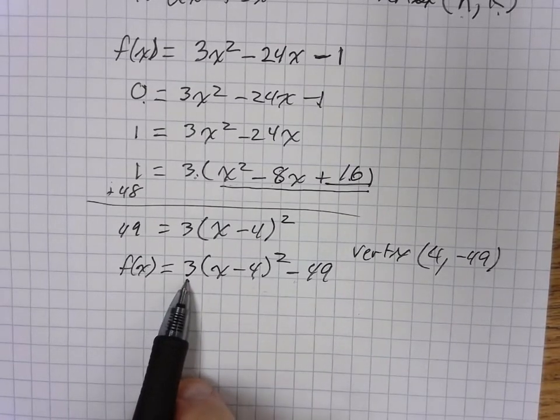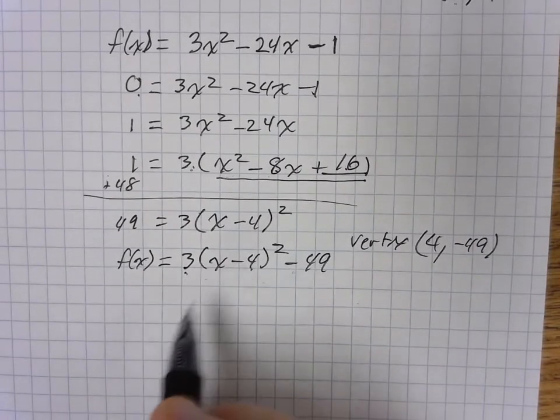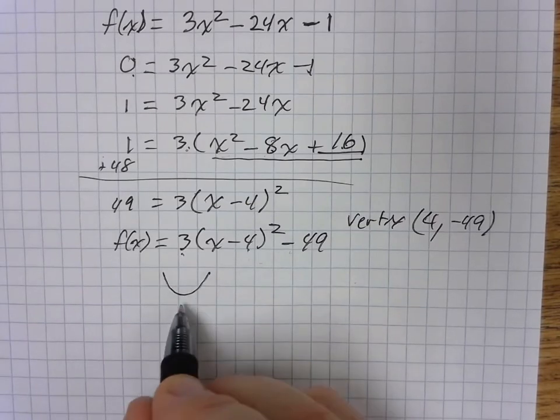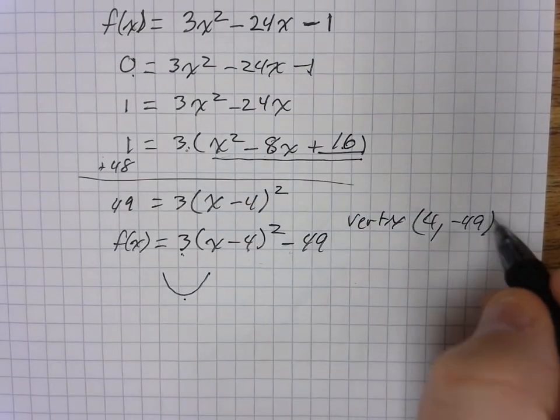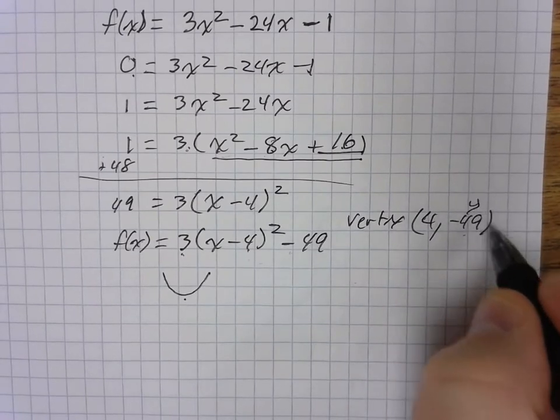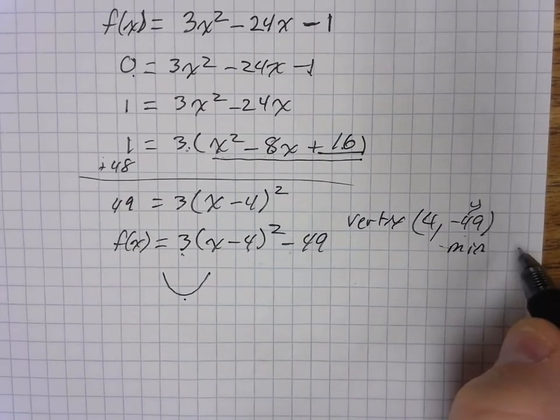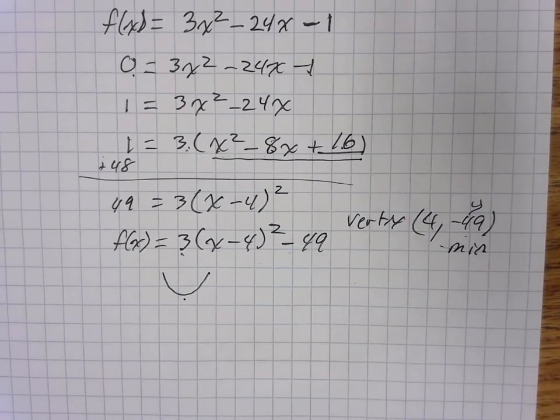Now, since this is a positive number here, that means our curve is going like this, which creates a minimum point. Therefore, this value right here, which is the y, is actually our minimum value of the function.